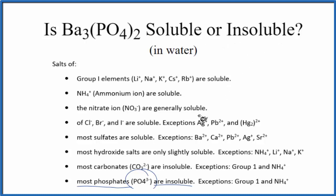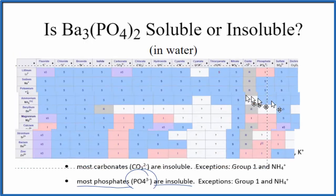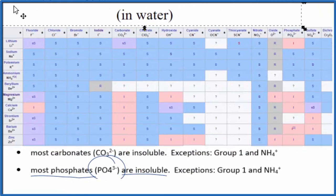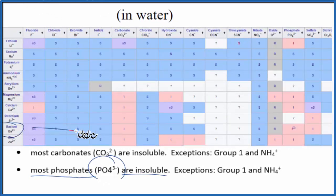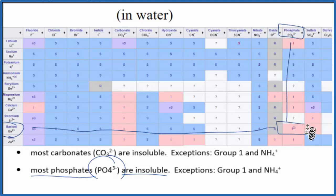We could also check a solubility chart to see if that's the case. So here's a portion of a solubility chart, a little bit small, but we find barium here, Ba²⁺. We go over here and phosphate, that PO4³⁻. We go down and it's insoluble.